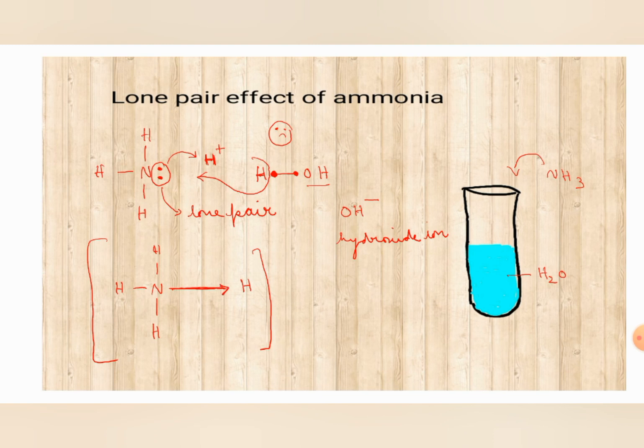How we will represent it? To show that this electron pair is donated by nitrogen, we will put that covalent bond in the form of an arrow. This is what we call as a coordinate bond.